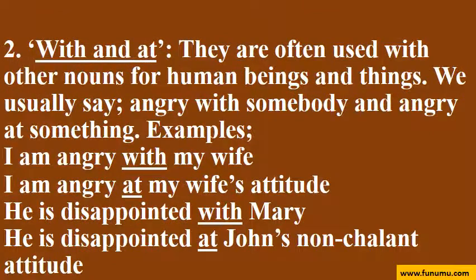2. With and at are often used with nouns for human beings and things. We usually say angry with somebody and angry at something. Examples: I am angry with my wife. I am angry at my wife's attitude. He is disappointed with Mary. He is disappointed at John's nonchalant attitude.